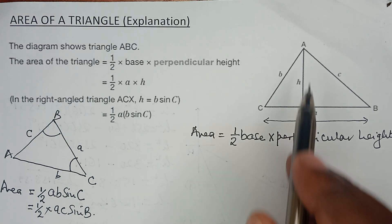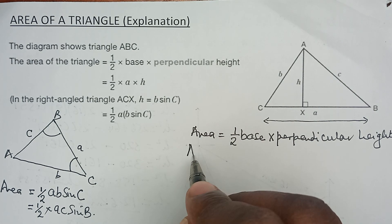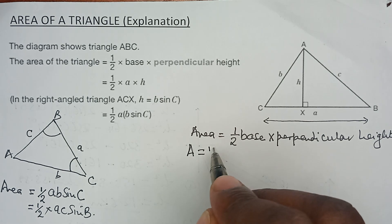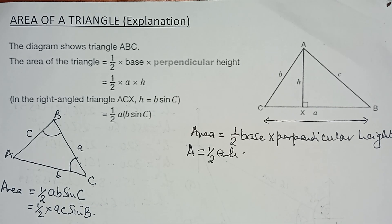So it follows that the area is a half times base, which is A, times H. But because we want to derive this from here, and we know that H is not in the picture...